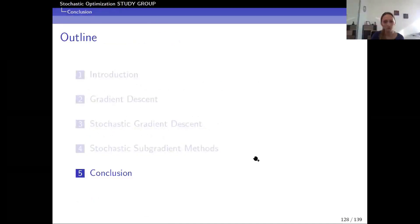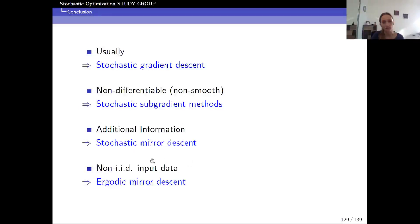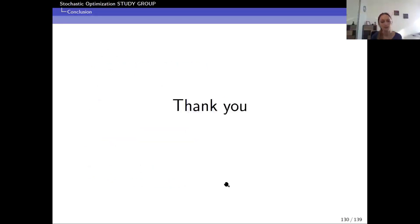In summary: if we have a stochastic optimization problem with a smooth cost function, we can use stochastic gradient descent. If we have non-differentiable functions, stochastic subgradient method is better suited. If we have additional information about underlying geometry, stochastic mirror descent can be used — and it was also shown to converge for non-IID input data. Thank you for your attention. If you have any questions, feel free to ask.